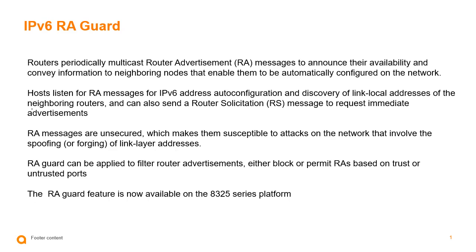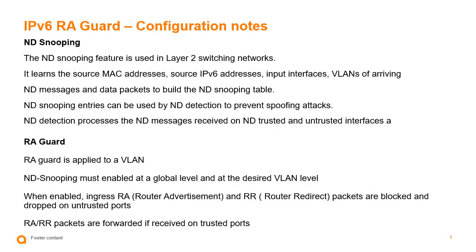RA guard for the 8325 series can be applied to filter router advertisements — either block or permit RAs based on trusted or untrusted ports. This is the feature provided in 10.09. ND snooping (neighbor discovery snooping) must be enabled at a global level and also on the desired VLAN. The ND snooping feature prevents neighbor discovery attacks — it not only snoops but also detects attacks by default. When enabled, ND snooping with RA guard causes ingress router advertisements and router redirects to be blocked and dropped on untrusted ports.